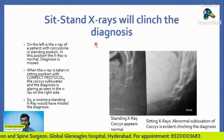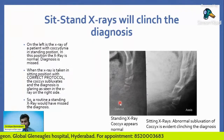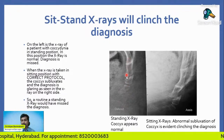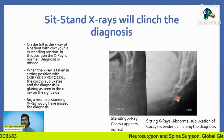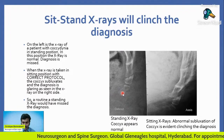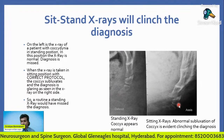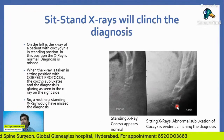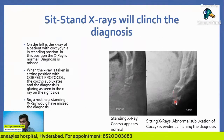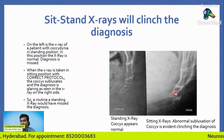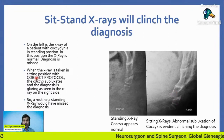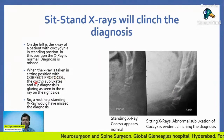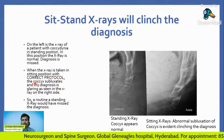How do you diagnose this? This picture was taken when the patient is standing — the coccyx X-ray appears absolutely normal. This X-ray was taken when the patient is sitting — the coccyx goes into subluxation. You can see the subluxation: the coccyx is gliding on the sacrum and the diagnosis is evident. When the X-ray is taken in the sitting position with the correct protocol, the coccyx subluxates and the diagnosis is glaring in the X-ray.